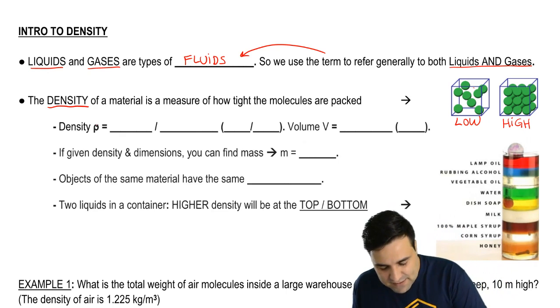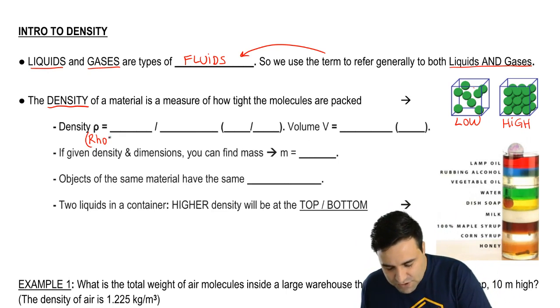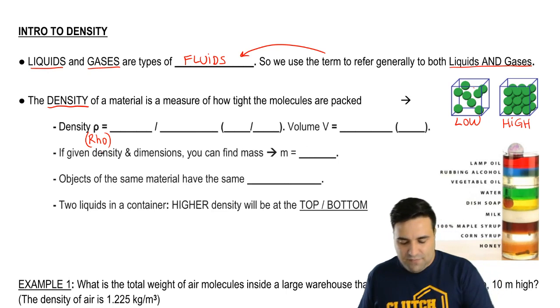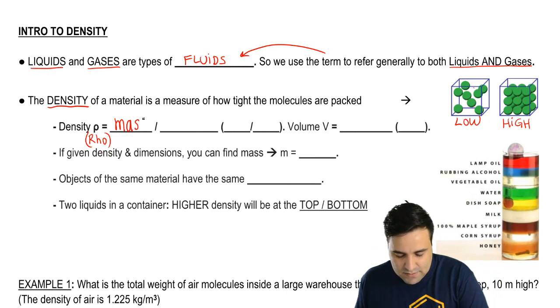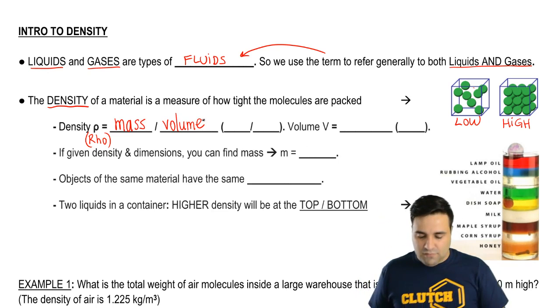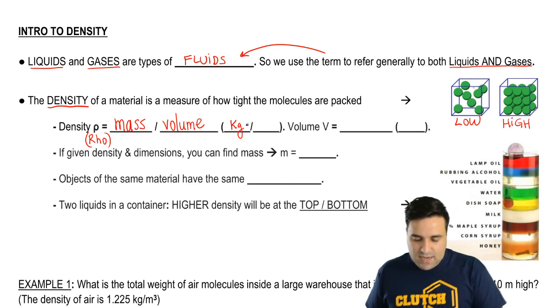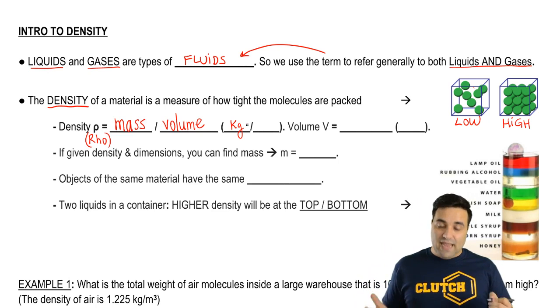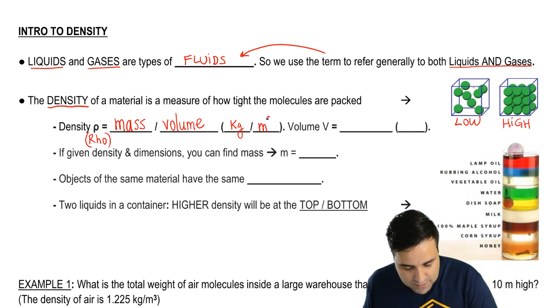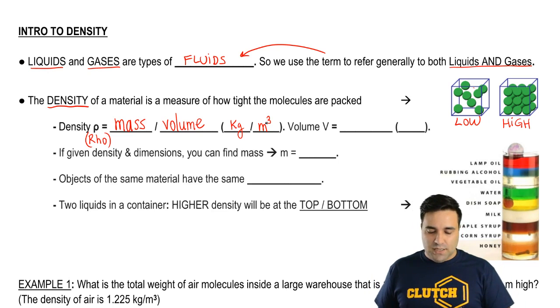Density in physics is given by the Greek letter rho, which is a little P, a curvy P. And if you remember, it's simply mass divided by volume. Mass divided by volume. So mass in physics is always kilograms. And volume is a three-dimensional length. So it's going to be cubic meter. So it's kilograms per cubic meter.